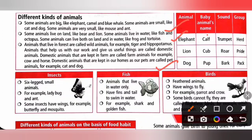Elephant: the baby elephant is called a calf, the sound of an elephant is a trumpet, and the group of elephants is called a herd.